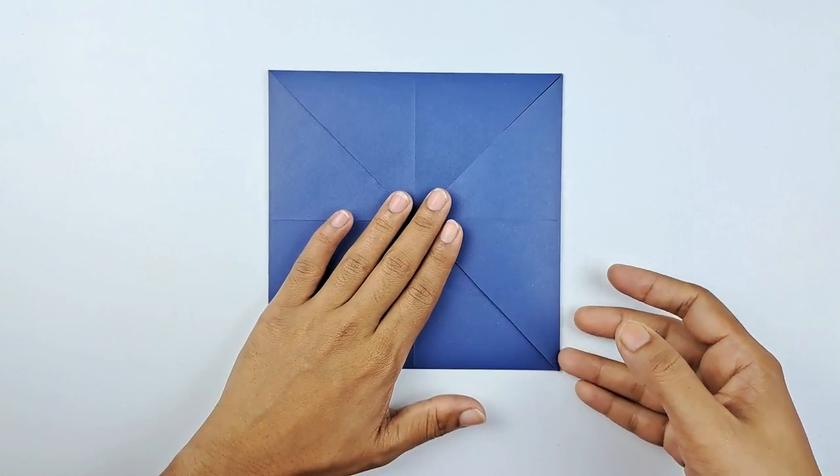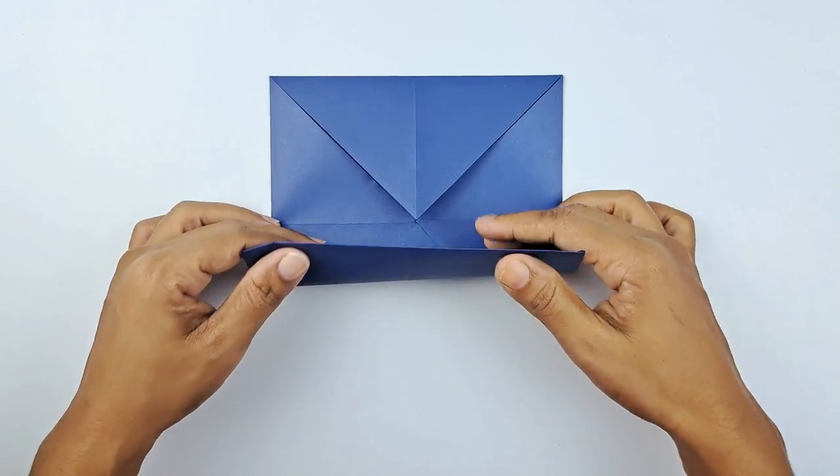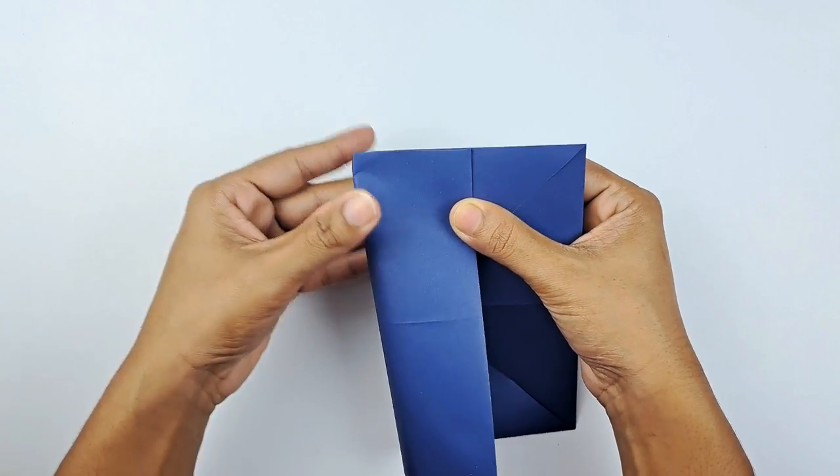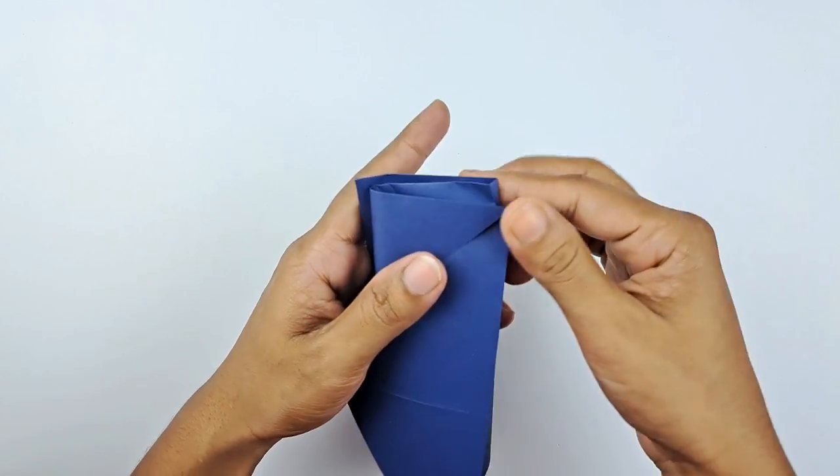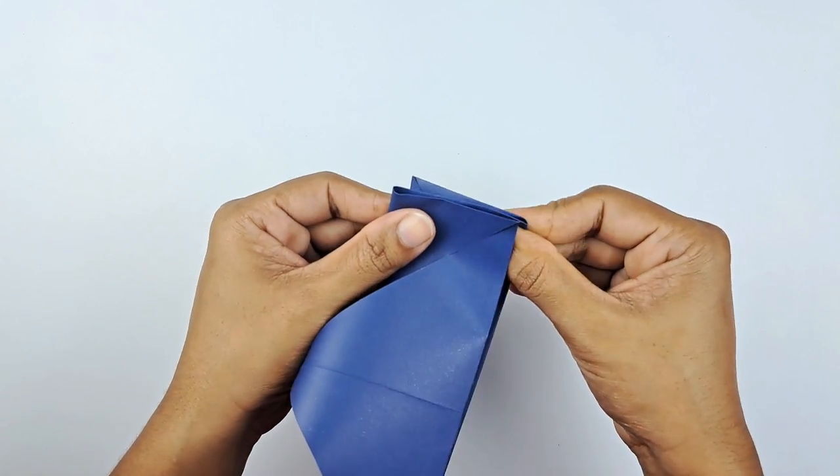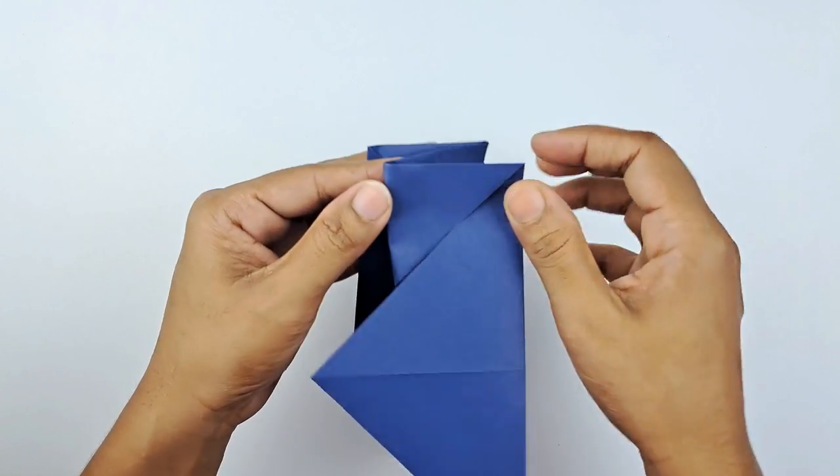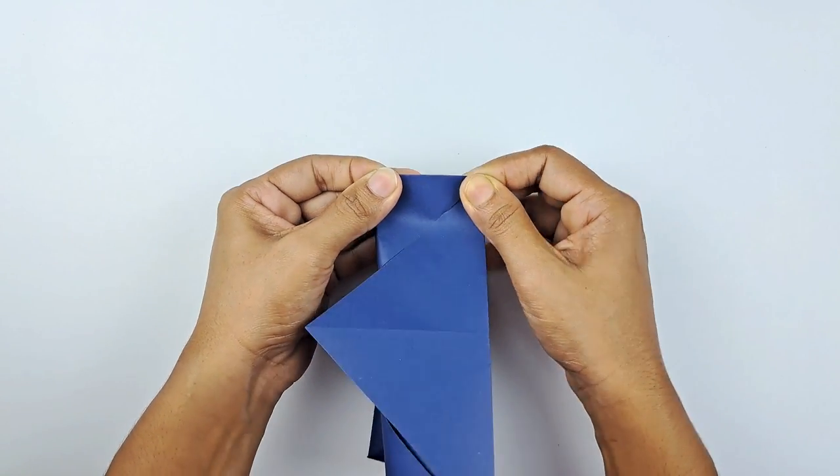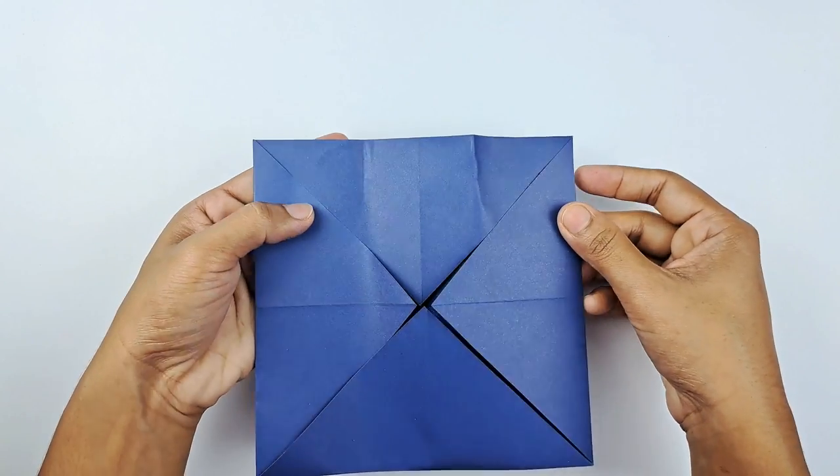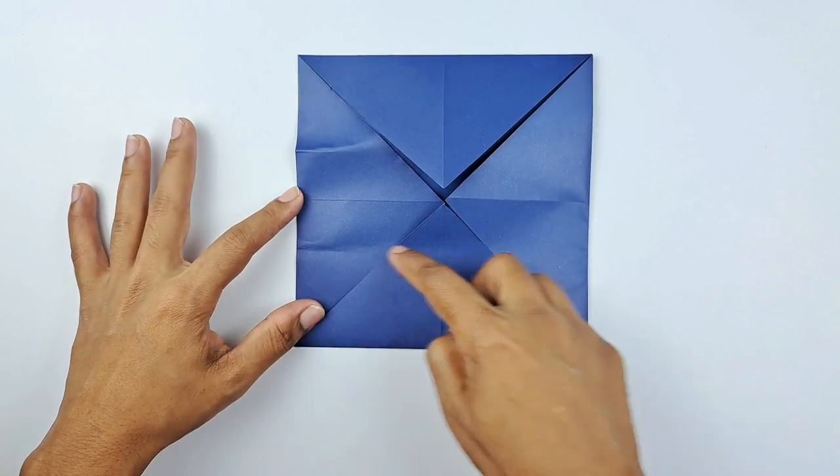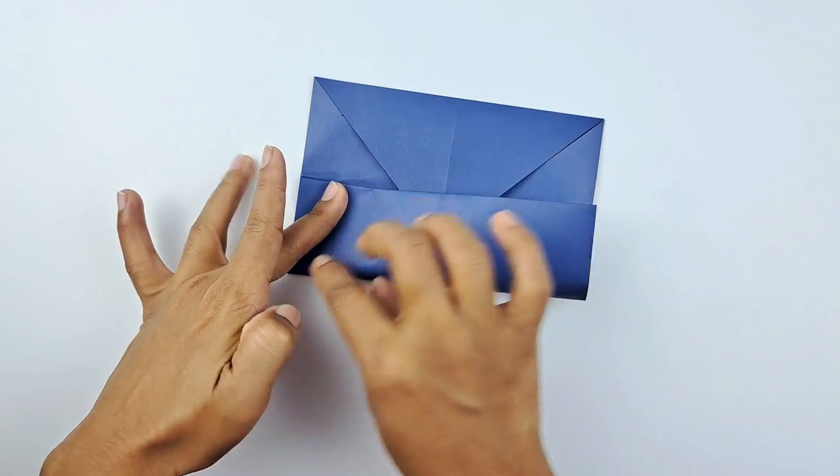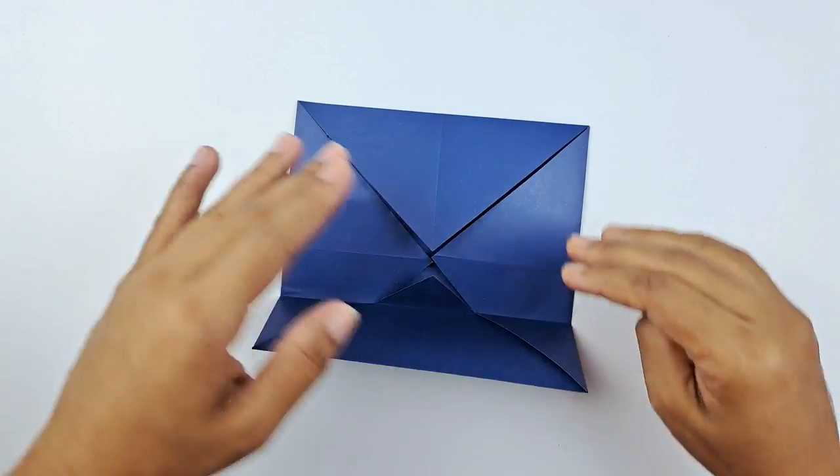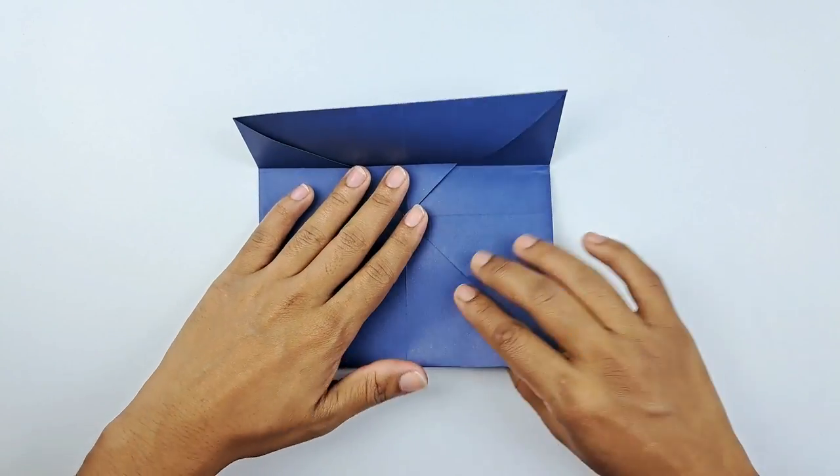Now we're going to fold that in half, like so. And then fold in half again on the other side, like this. Pause if you need to and rewind and watch again. Fold, smooth down those edges. And then fold and smooth down those edges.